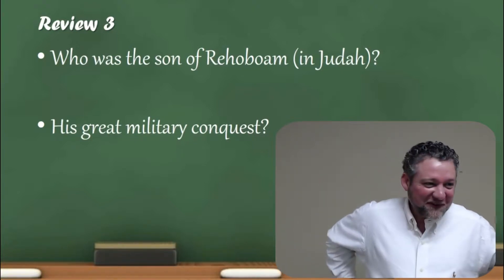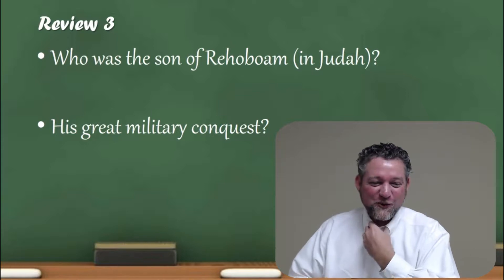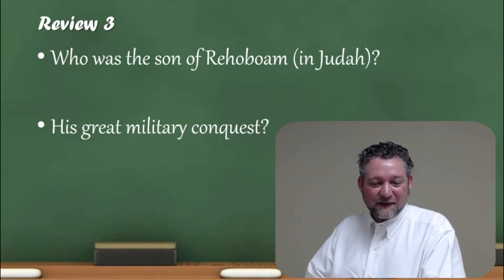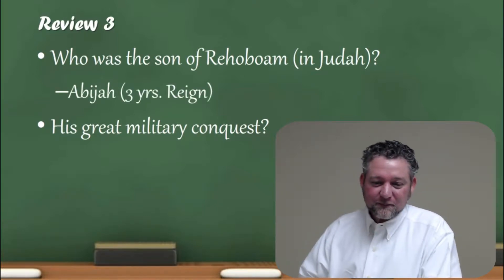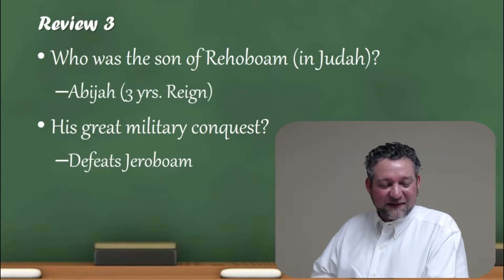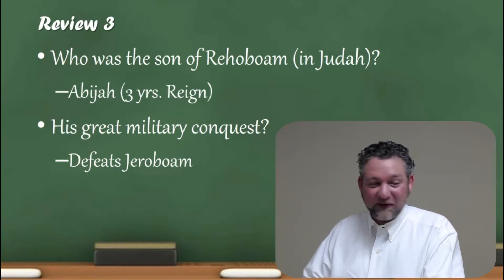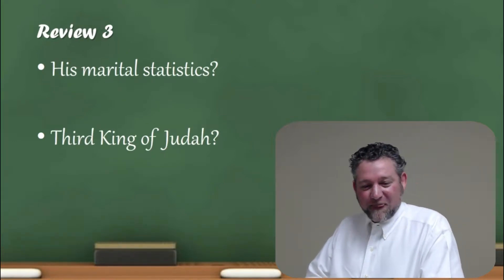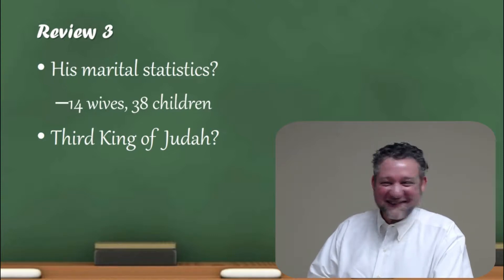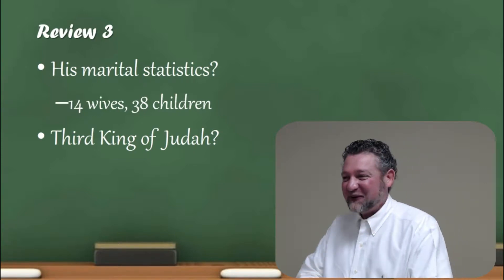All right, so a quick review — you can pull your notes out from last week. Who was the son of Rehoboam in Judah? Abijah, correct. And Abijah is going to reign for three years. His great military conquest — he defeats Jeroboam. That's a major thing. His marital statistics were outstanding in a negative way: he had 14 wives and 38 children. Noteworthy, not for good, but for bad.